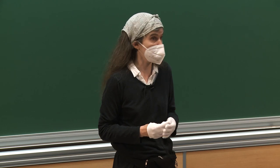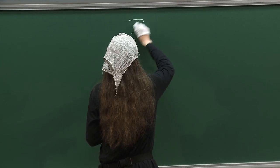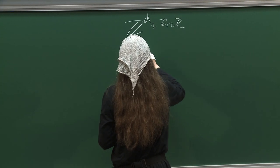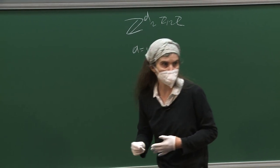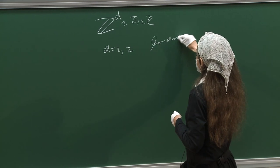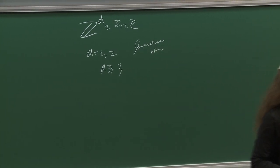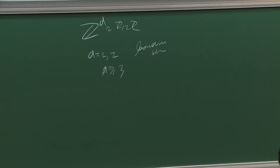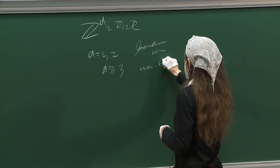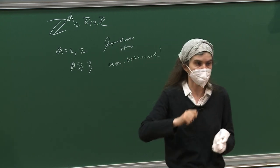We don't understand well what happens with the Poisson boundary for solvable groups — even when it is trivial and when it is not. I recall very old examples of Kaimanovich and Vershik. Consider the wreath product — the lamplighter group. If you take d = 1 or 2 and consider the simple random walk, the growth is exponential but the boundary is trivial. If d ≥ 3, or any group of non-quadratic growth, then the boundary is non-trivial — but the group is amenable.